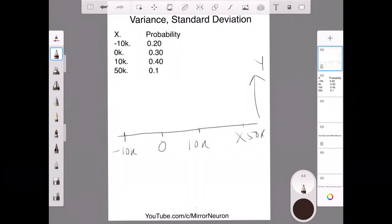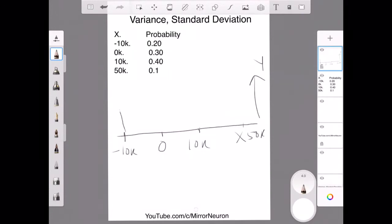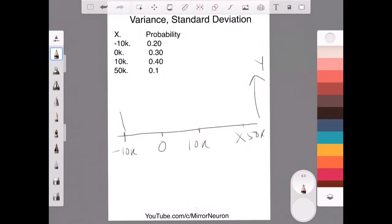and on the y axis we are plotting the probability. So, getting a minus 10k that is in loss is around 0.2 right and then 0 roughly around, let me choose a color, and for 0 we have say around 30 percent, for positive 10 we have say around 40 percent right and then for 50 we have hardly 10 percent.